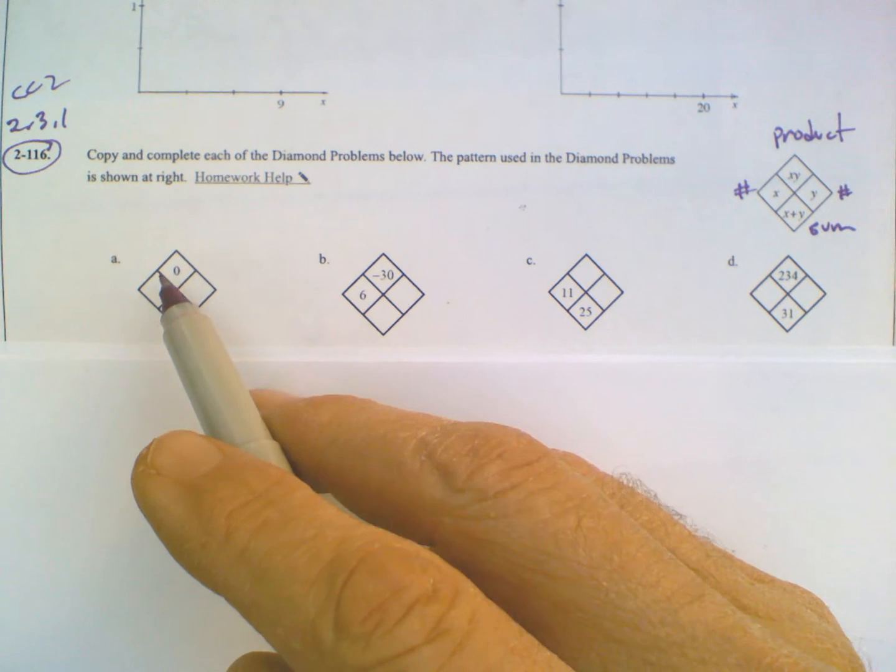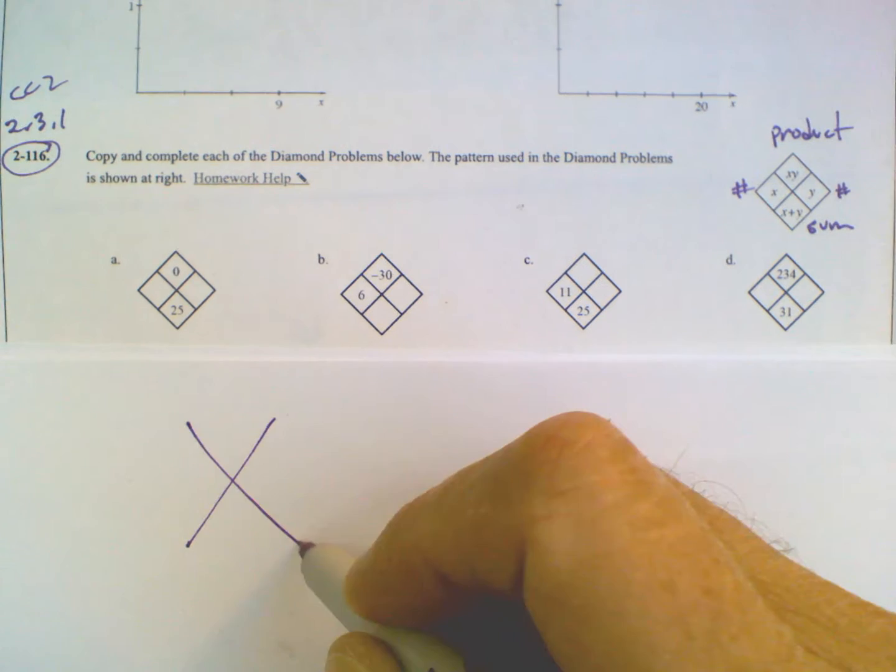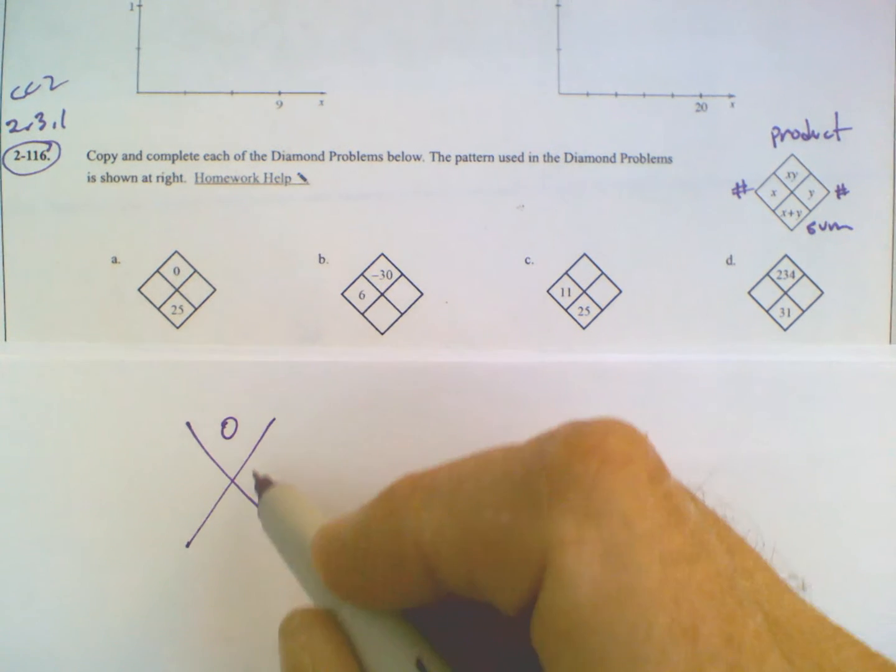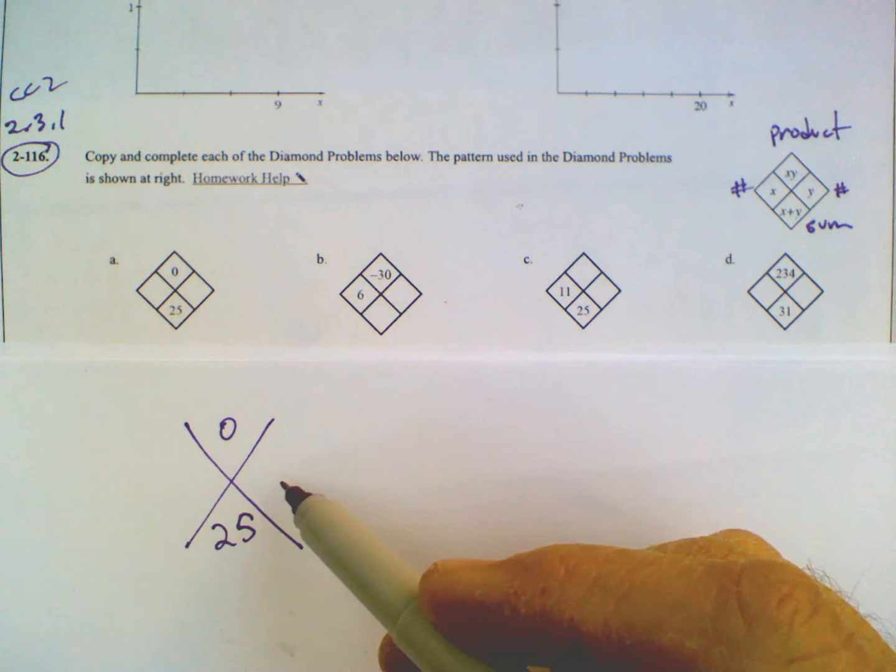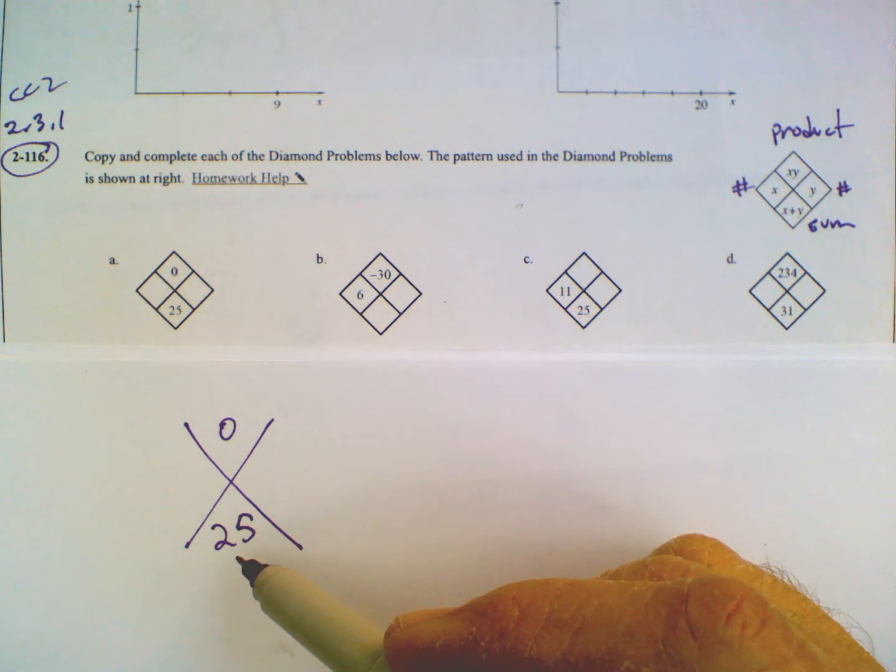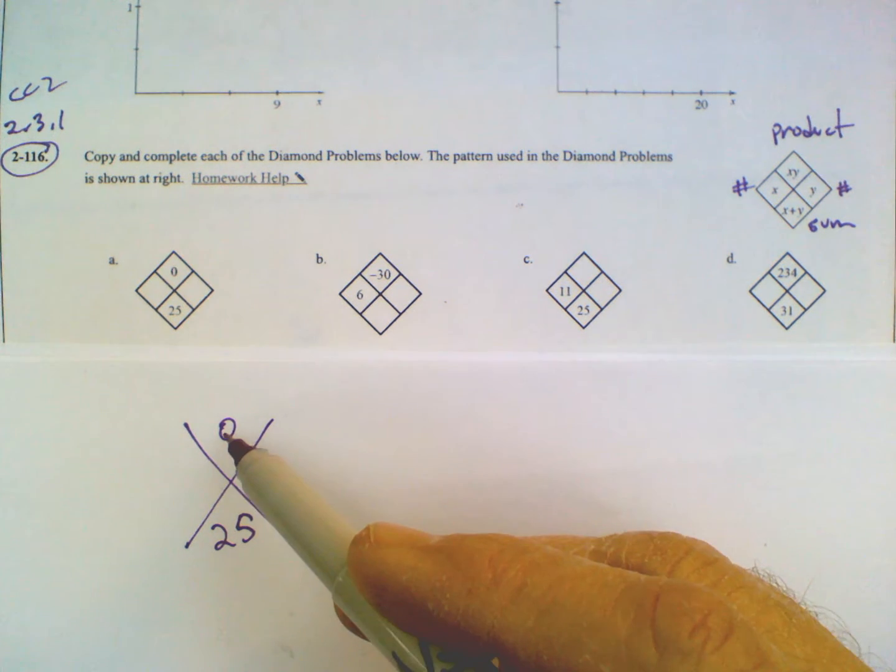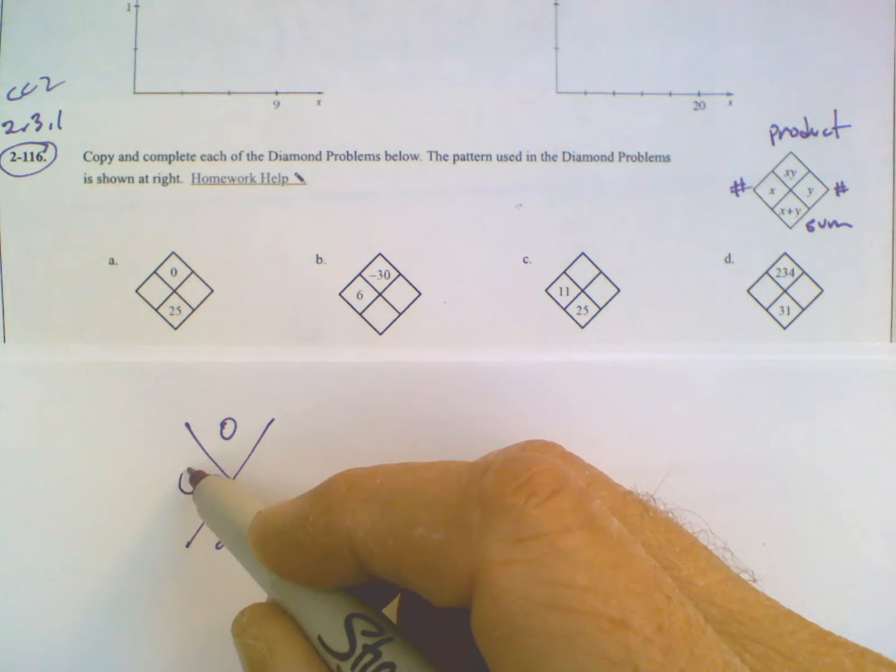So if we're looking at A, I'm going to get a little bit bigger here so we can see it. A has a 0 and a 25, so I need to find two numbers that multiply to be 0 but add to be 25. Well, in order to get a product of 0, the only way to get a product of 0 is to have one of the numbers be 0.